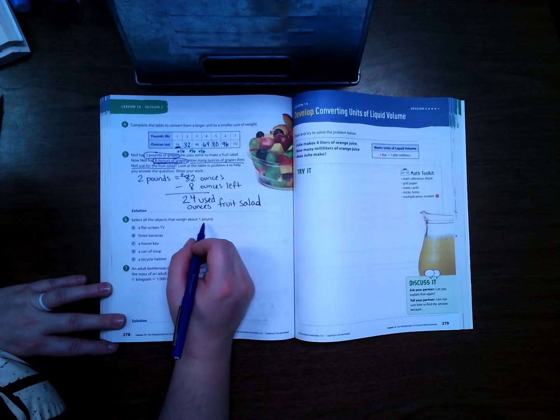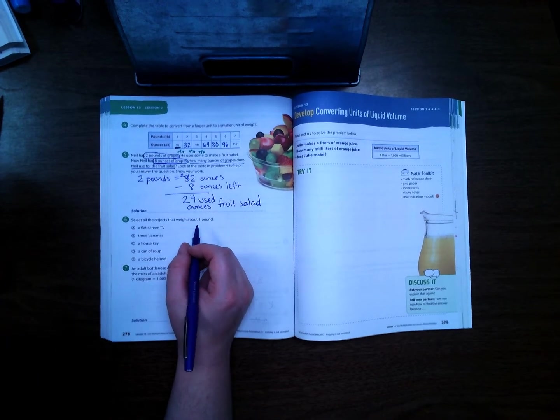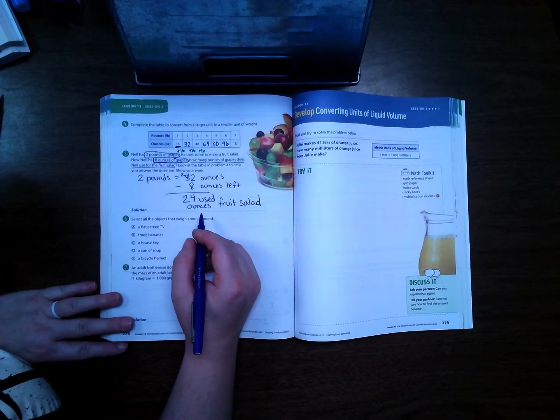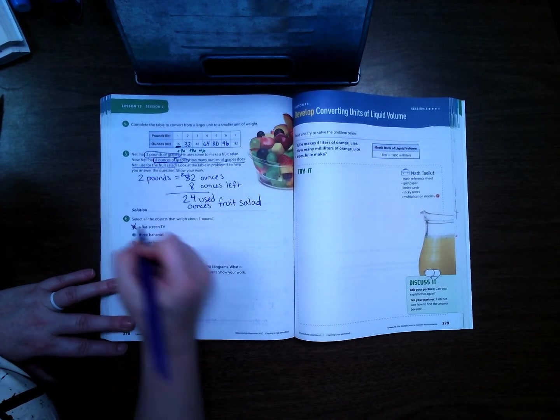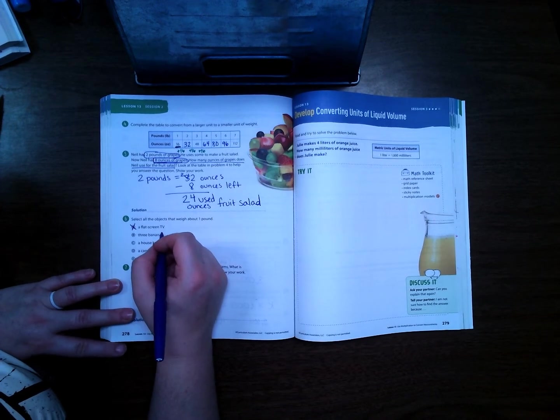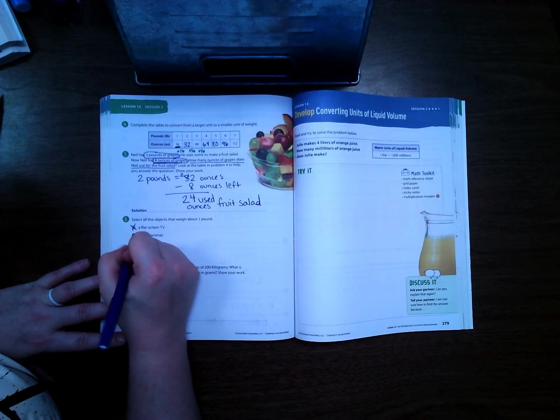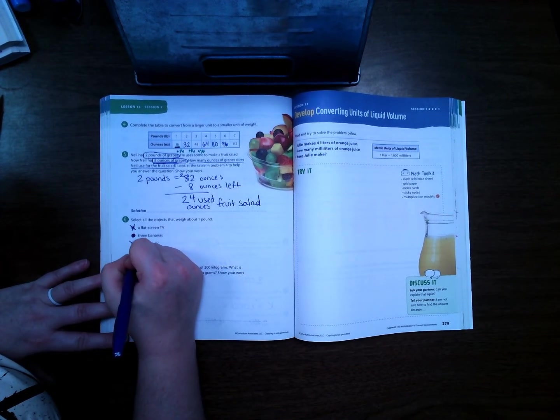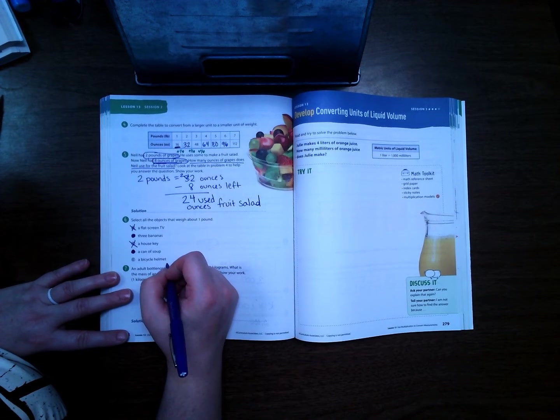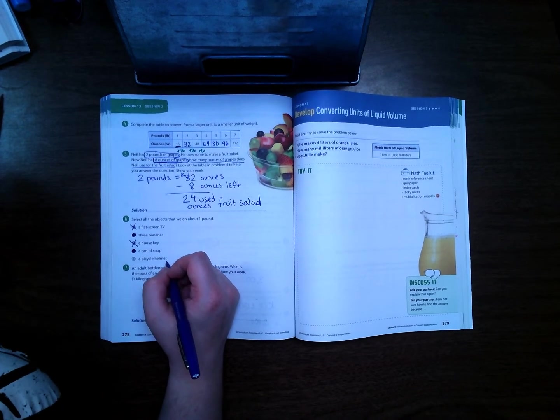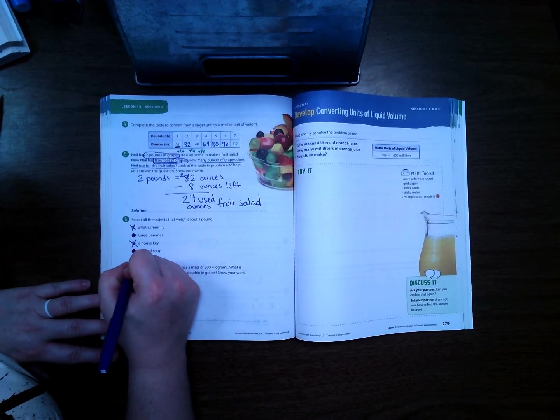Select all the objects that weigh about 1 pound. Remember 1 pound is about the size of a water bottle, or like a can of soup or a can of corn or a can of green beans. A flat screen TV? No, that weighs way more. 3 bananas? Yeah, that probably weighs about the same. A house key? Oh that's pretty tiny. A can of soup? Yep, we know a can of soup weighs about 1 pound. A bicycle helmet? That one's going to be real close. It probably depends on the bicycle helmet, huh? I would say yeah it probably does weigh about 1 pound.